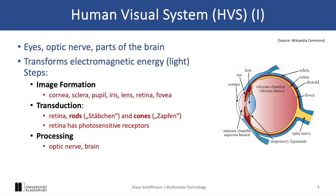Let's take a look at the basic structure of the human visual system. It starts with the eyes, the optic nerve, and parts of the brain. The system transforms electromagnetic energy, or light, into visual information. This process occurs in three main steps.